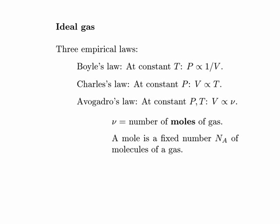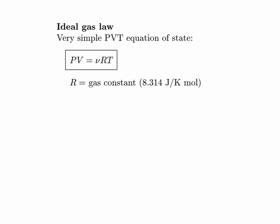We can put together these three empirical facts into one law: the ideal gas law, PV equals nu R T, where nu is the number of moles, T is the absolute temperature, and R is the gas constant — a constant of nature with a value of 8.314 joules per kelvin per mole, the same for all gases. Notice that this equation of state has units of energy: pressure times volume is newtons per meter squared times meters cubed, which equals newton-meters or joules.